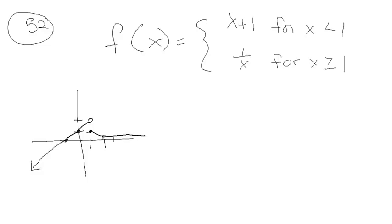I mean, sorry, it's that function that looks like that. 1 over x has two branches, and it hugs the axes. It has asymptotic behavior at the axes.